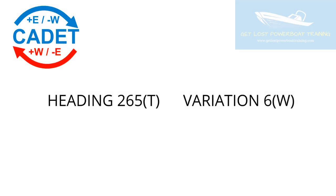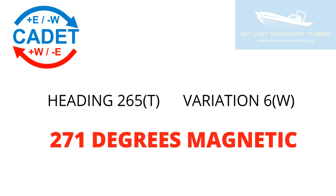Here's an example going the other way. I have a heading of 265 degrees true and I want to change it to a magnetic heading. The variation is 6 degrees to the west. Looking at the CADET picture, I'm going from true to compass, so I'm going to add west. 265 degrees plus a 6 degree westerly variation gives me 271 degrees magnetic — a heading I can now tell the helmsman to follow on the steering compass.